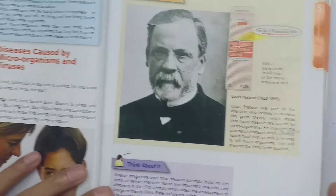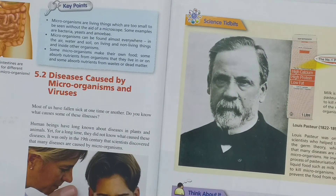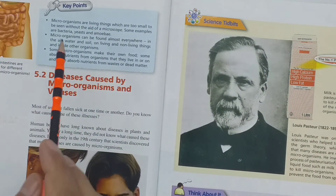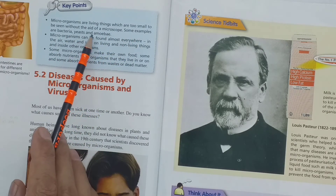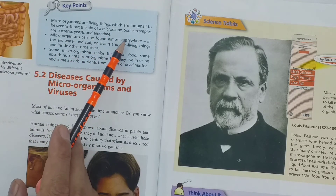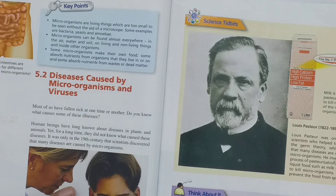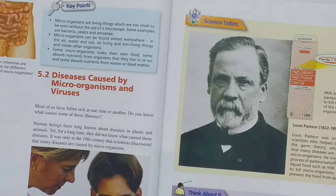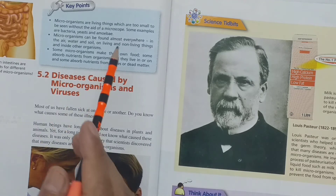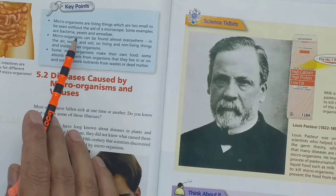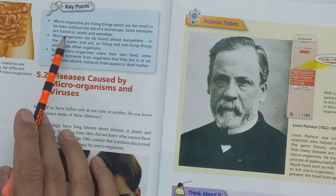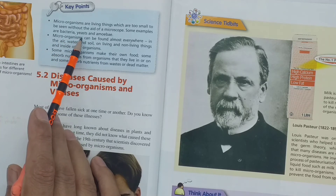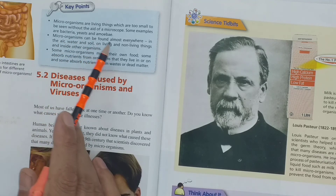Now we have the key points. Microorganisms are living things which are too small to be seen without the aid of microscopes. Some examples are bacteria, yeast, and amoeba.